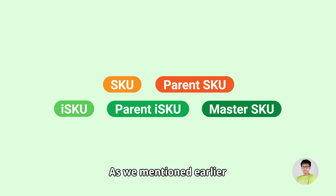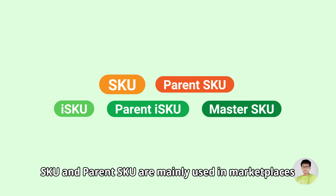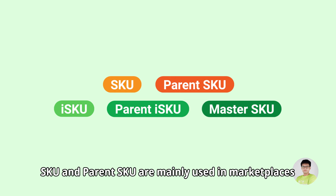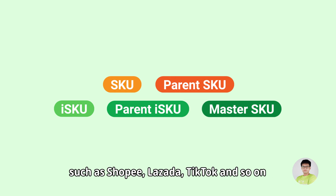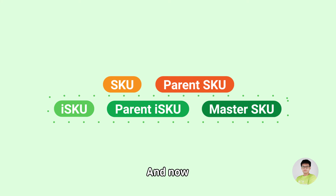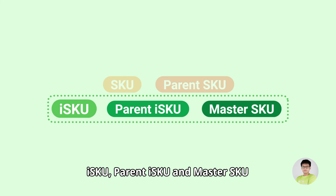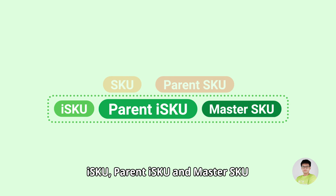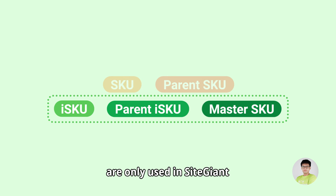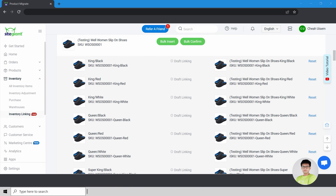As we mentioned earlier, SKU and Parent SKU are mainly used in marketplaces such as Shopee, Lazada, TikTok, and so on. ISKU, Parent ISKU, and Master SKU are only used in SiteGiant.